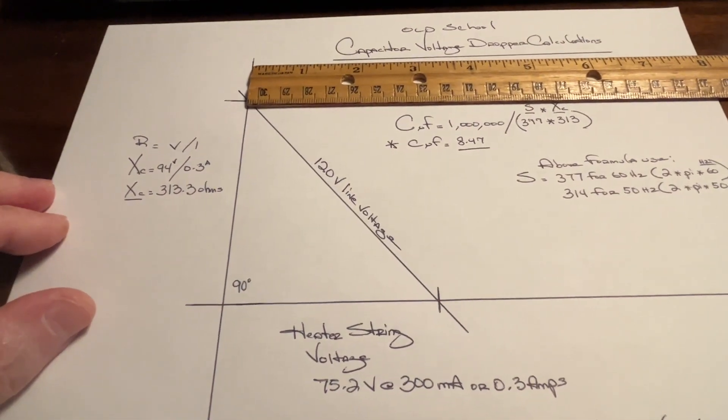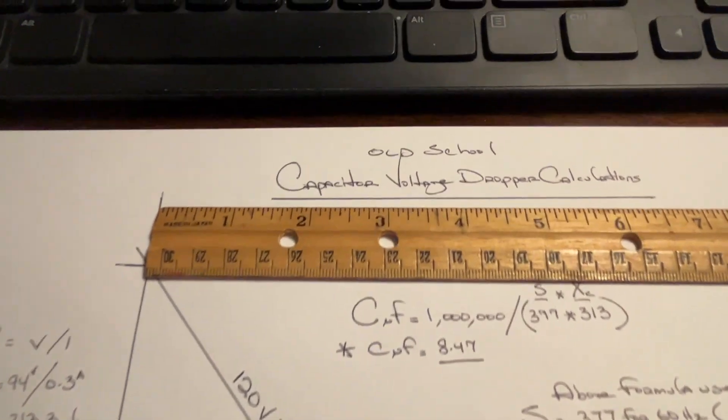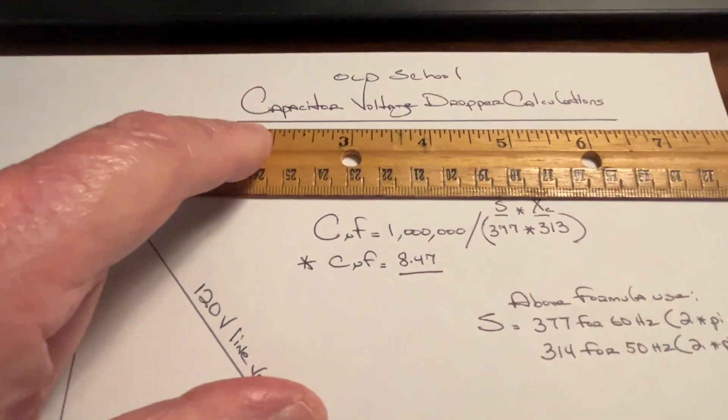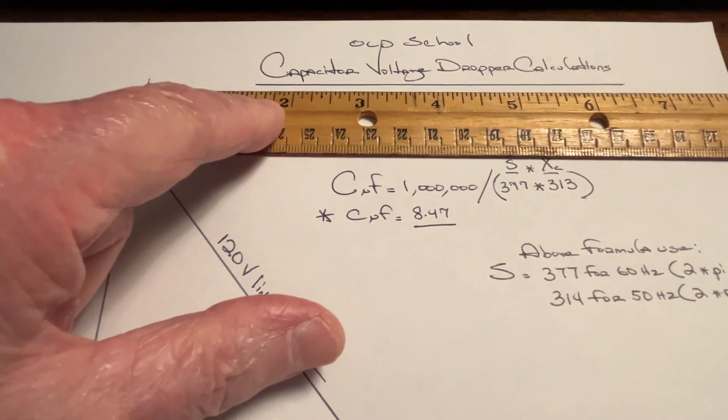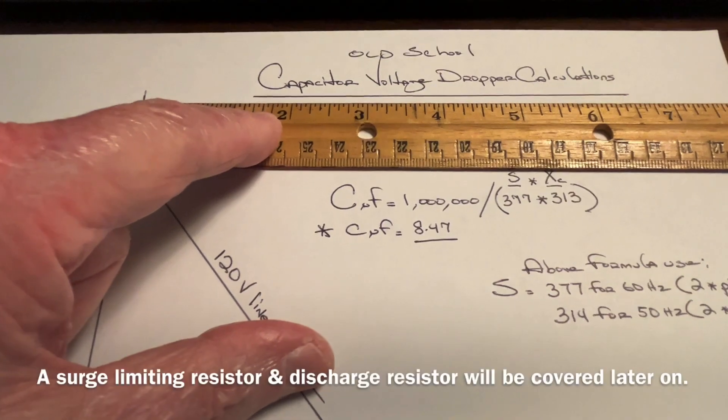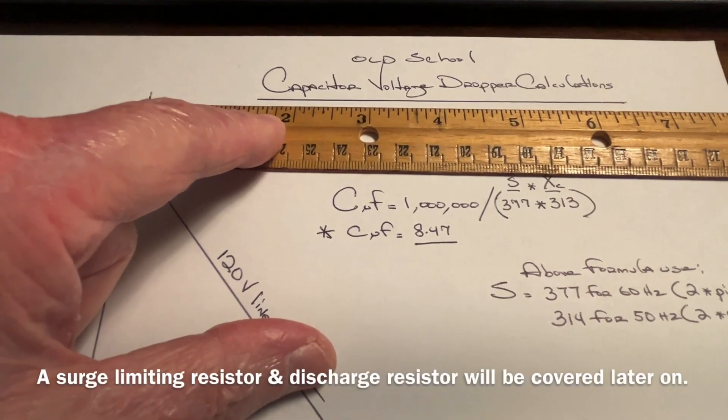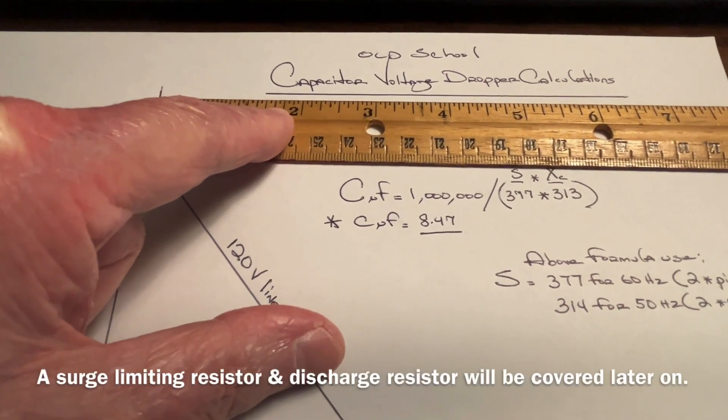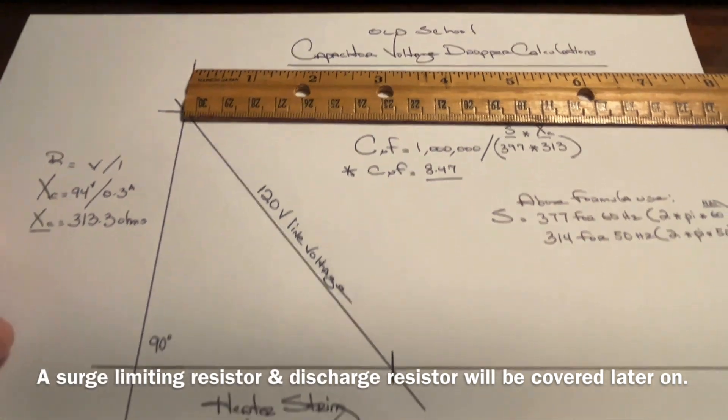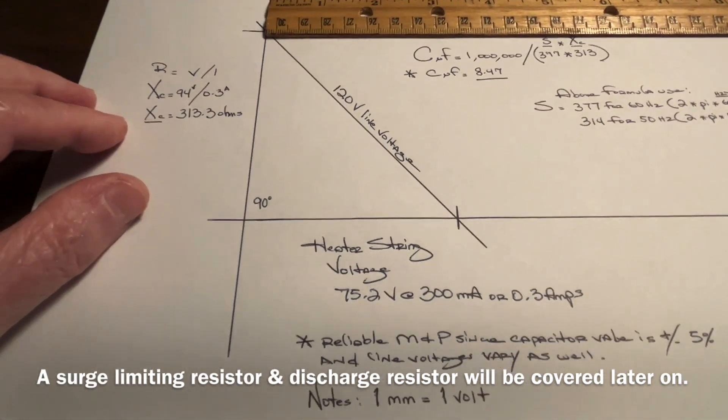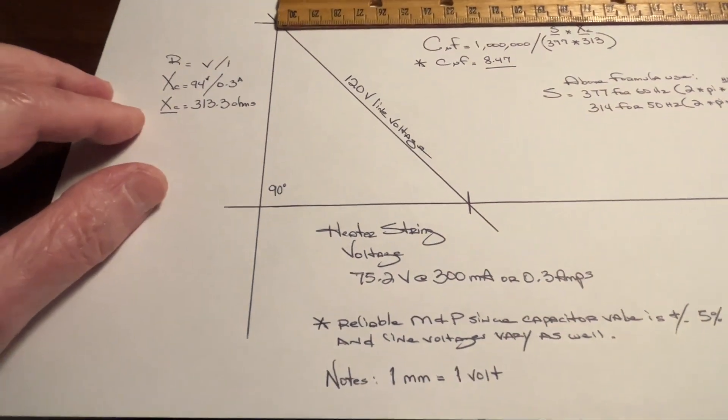and a basic calculator, and we can quickly identify the capacitor value that we need to act as a voltage dropper for these old vintage radios or alike.